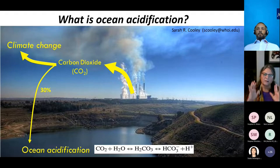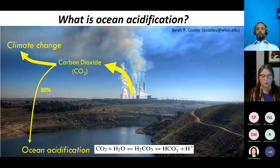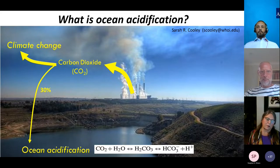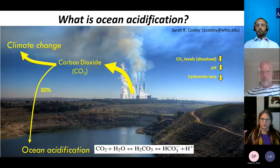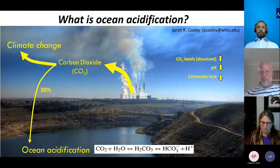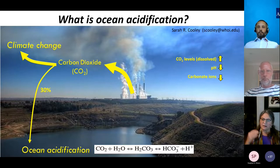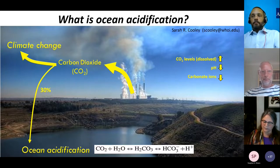Not all of the carbon dioxide stays in the atmosphere — some is absorbed into the ocean, about a quarter to a third, let's say 30 percent. In a way that's a good thing, because if it wasn't going into the ocean we'd have more CO2 in the atmosphere. But the fact that it does go into the ocean enables ocean acidification. There's more CO2 dissolved in the ocean, which drives down the pH and the carbonate ions.